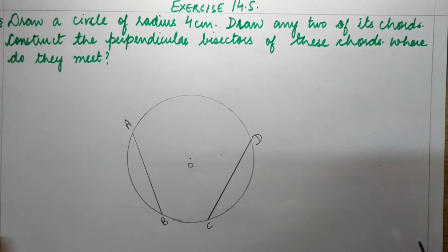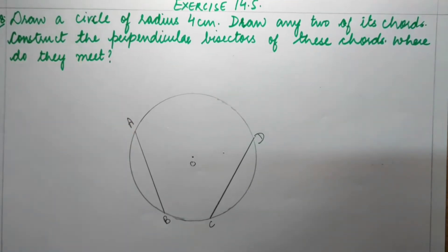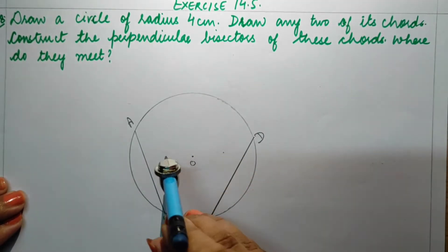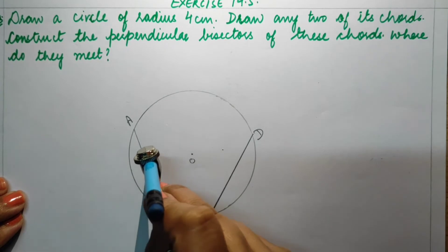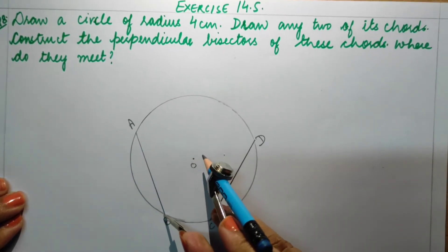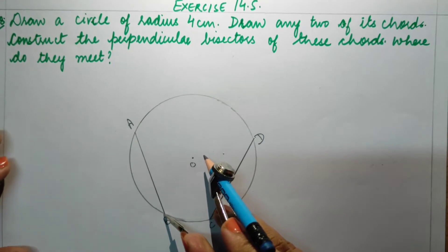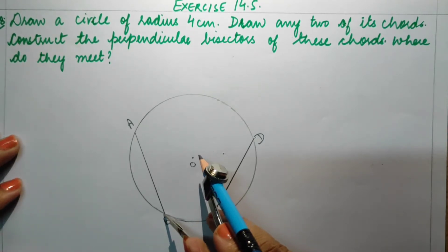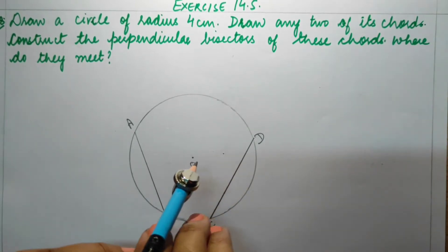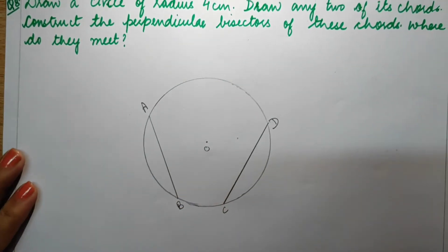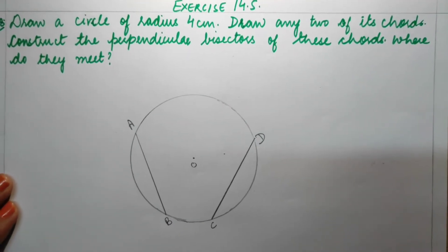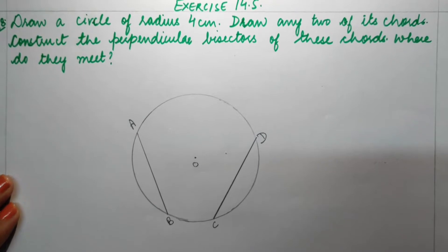First, we have to draw the perpendicular bisector of chord AB. Open your compass to more than half the length. Note that your arcs can cut inside the circle or outside the circle — if you open your compass more, they will cut outside. This time let's cut them inside the circle.